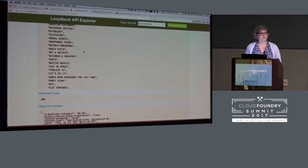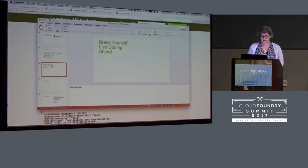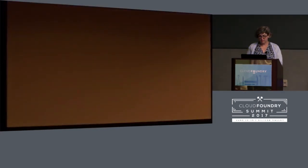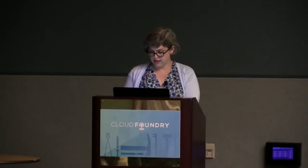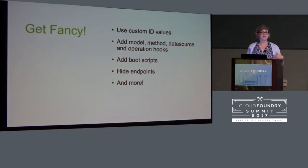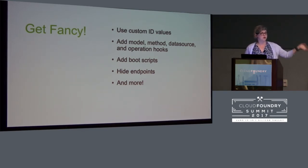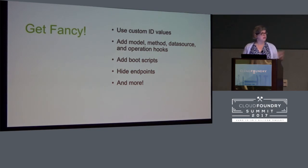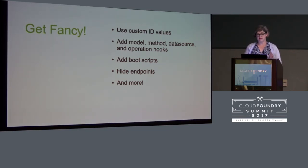It really is just that simple to make APIs with Loopback, and it's also pretty fun. There are lots of other ways you can customize your Loopback application: you can use custom ID values, add hooks that happen at any point in the chain — when a record is saved, or once a record is returned but before it goes to the consumer. You can add boot scripts so something happens when your Loopback app starts. You can hide endpoints. There's a lot more stuff you can do. And of course, once you have your API, you can build a front end if that's what you like to do.